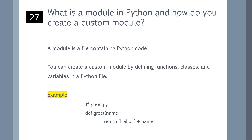What is a module in Python and how do you create a custom module? A module is a file containing Python code. You can create a custom module by defining functions, classes, and variables in a Python file. You can refer to the example shown on the screen.